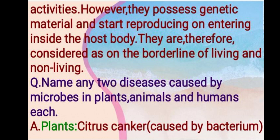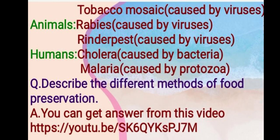Next question: name any two diseases caused by microbes in plants, animals, and humans. Diseases in plants: citrus canker, caused by bacteria; tobacco mosaic, caused by viruses. In animals: rabies and rinderpest, both caused by viruses. In human beings: cholera, caused by bacteria; and malaria, caused by protozoa.